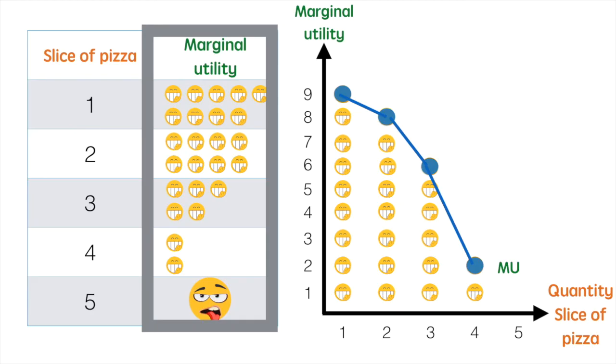As you can imagine, if the equilibrium price of a pizza slice was $9, I'd probably only end up eating one slice. That's because the second slice will only bring me a utility of 8, and I'm only willing to spend $9 on 9 units of utility or above.